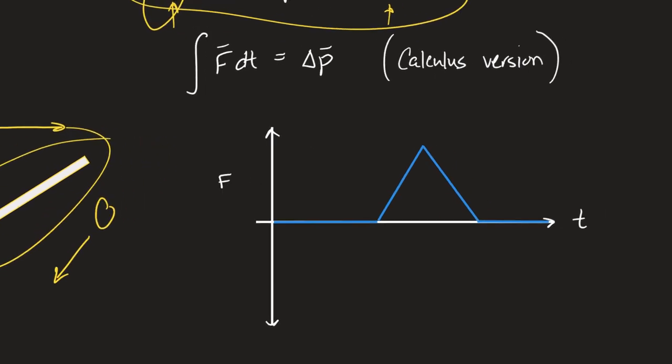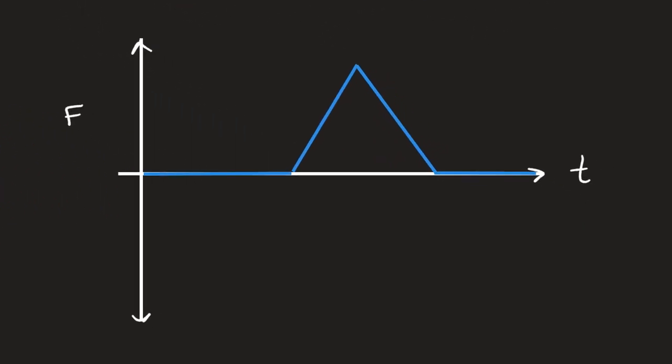I also want to talk about force versus time graphs. Two weeks ago we had a homework example with a force versus position graph. A force versus time graph is the same kind of thing — the area under the curve is the impulse. Impulse graphs for collisions often have a characteristic shape where there's no force, then the collision spike, then no force again as the two objects separate.